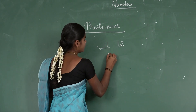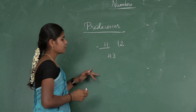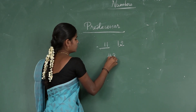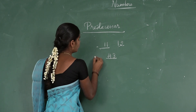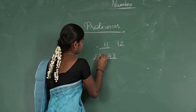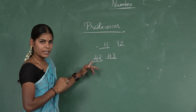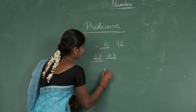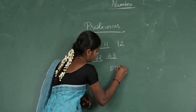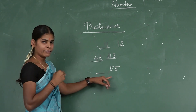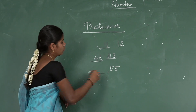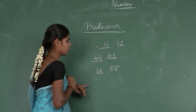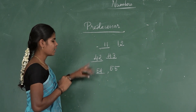Next example — 43. What is the predecessor of 43? The number just before 43 is 42. So 42 is the predecessor of 43. Next — 55. What is the predecessor of 55? The number just before 55 is 54. So 54 is the predecessor of 55.